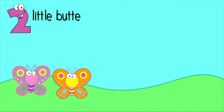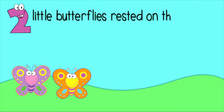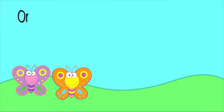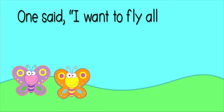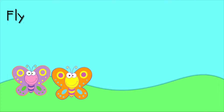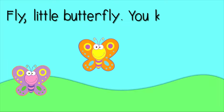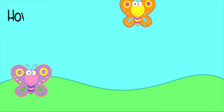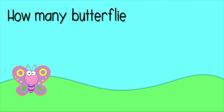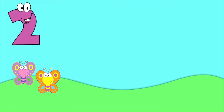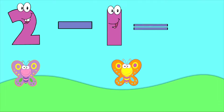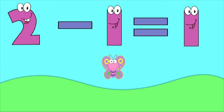Two little butterflies rested on the ground. One said, I want to fly all around. Fly, little butterfly, you know how. How many butterflies are left now? Two butterflies minus one butterfly equals one butterfly.